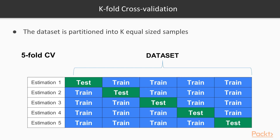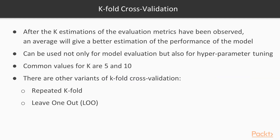After that, we use the second part for testing and the rest for training, getting a second estimation of our evaluation metrics. Then we use the third part for testing and the rest for training, and so on. In this way, we get not just one estimation of the evaluation metrics but five. After all k estimations have been observed, an average of them gives us a better estimation of model performance. Instead of just one evaluation metric, we can get many with k-fold cross-validation and take the average for a better result.